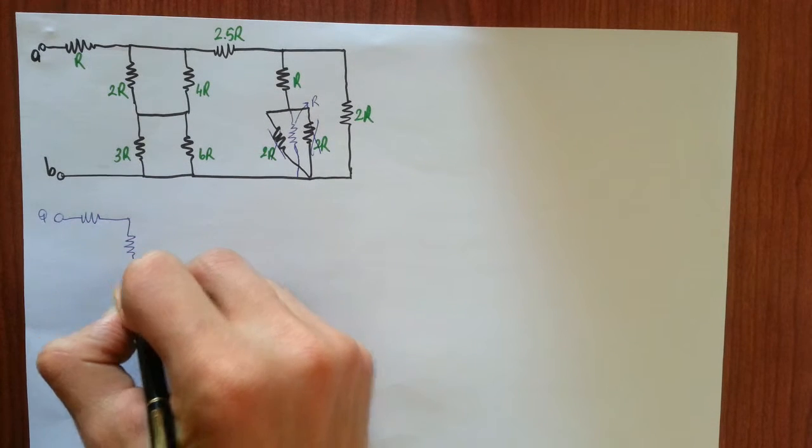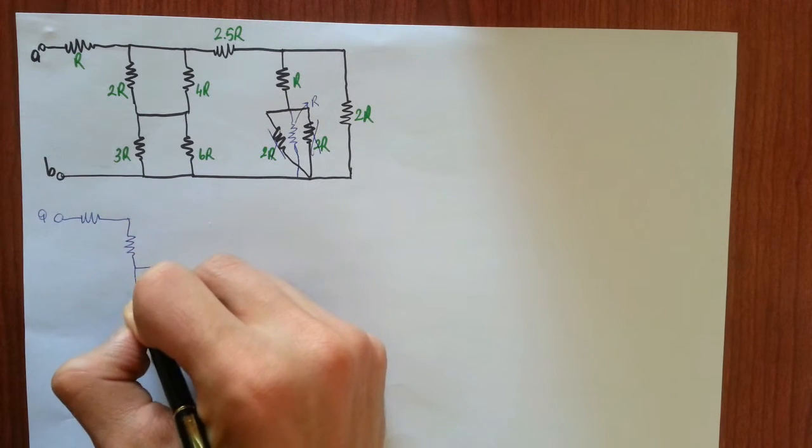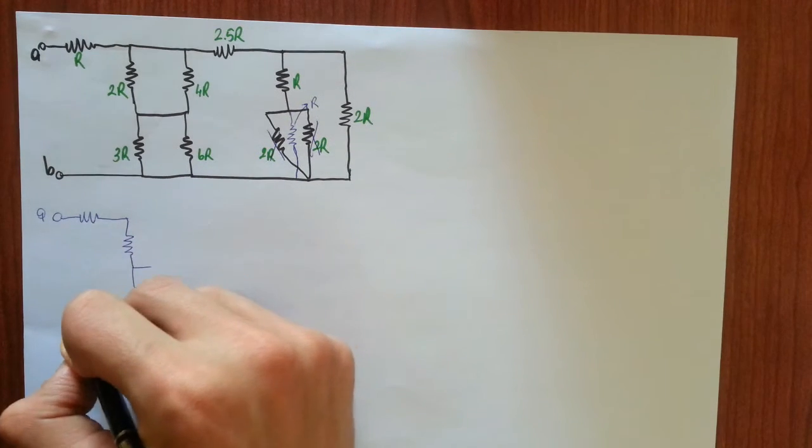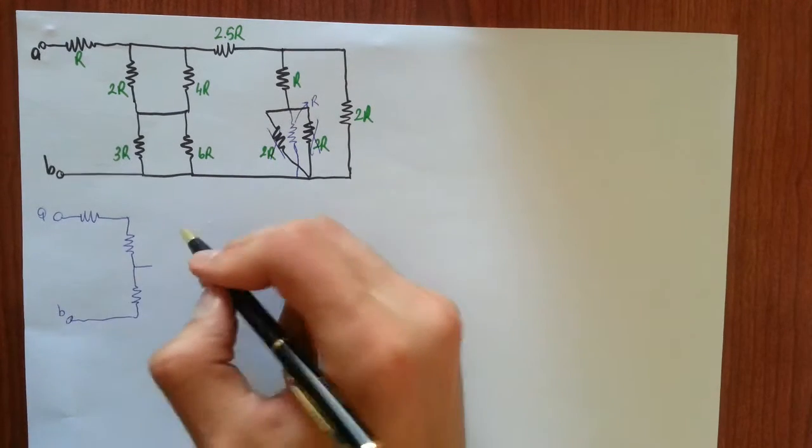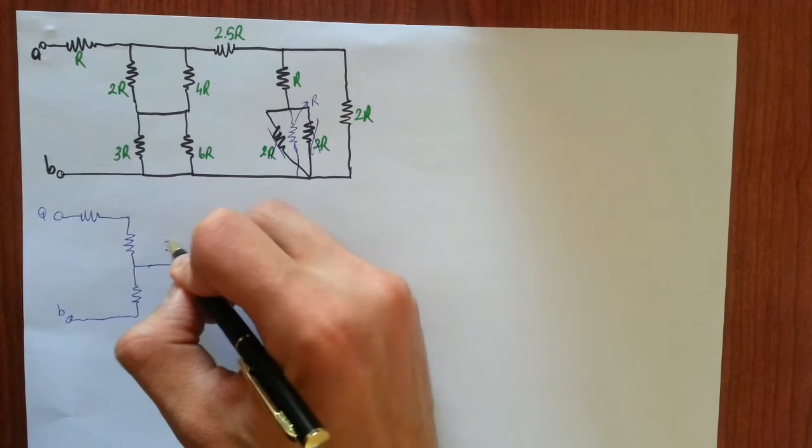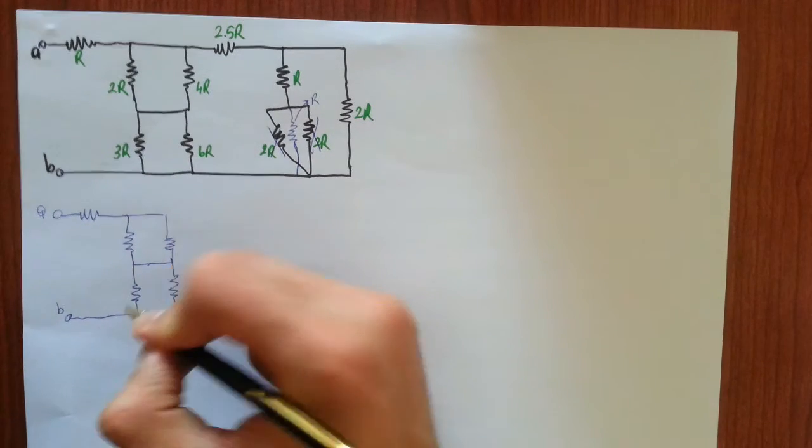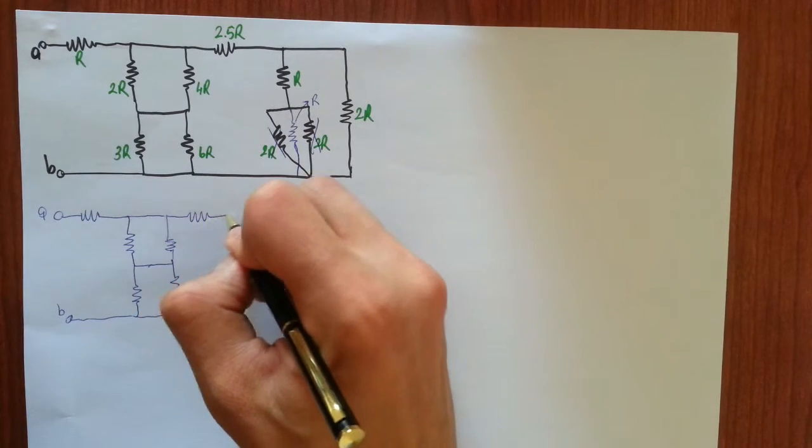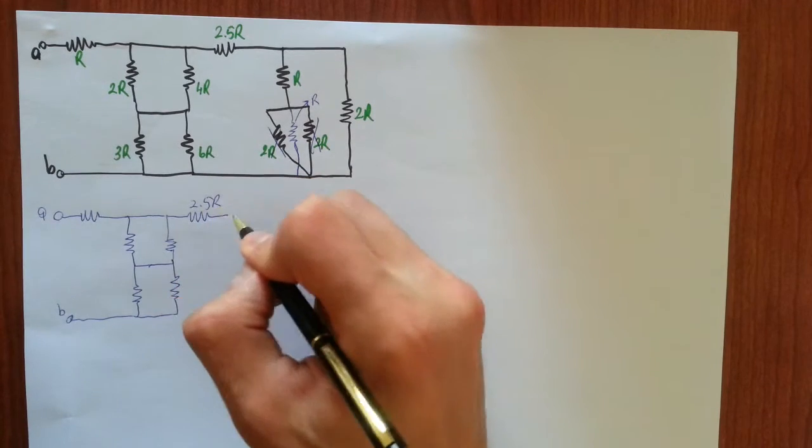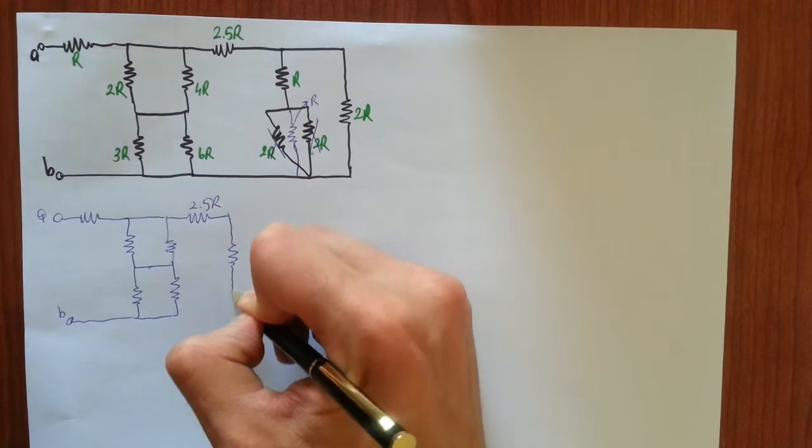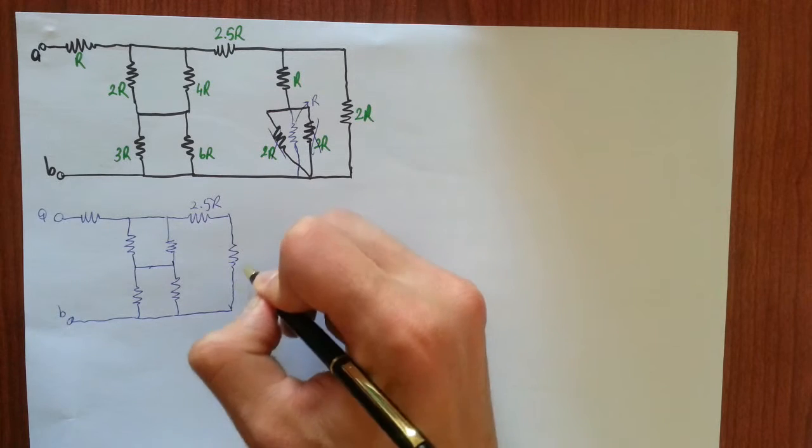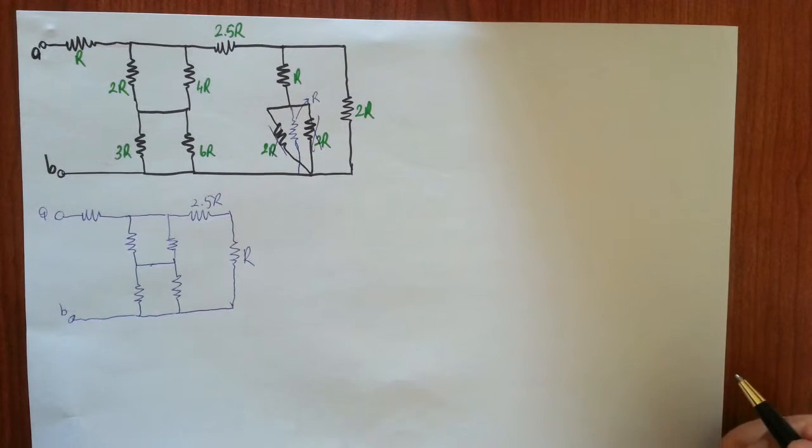I am drawing right now R, 2R, 3R terminals B, 4R, 6R, 2.5R and equivalent R resistor. Are you with me?